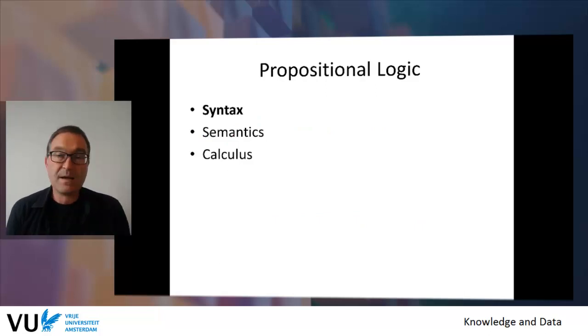Propositional logic is a simple example of a formal system. Let's look at the language — specifically the syntax, the semantics, and the calculus. A formal system has three elements: you specify all correctly written sentences from a structural perspective (syntax); you assign meaning to those sentences (semantics); and you have an algorithm or calculus to calculate the truth value for a given assignment. I will show how this works in propositional logic.